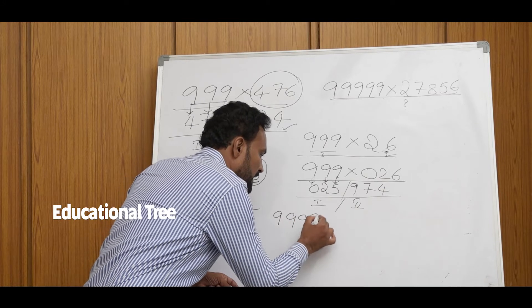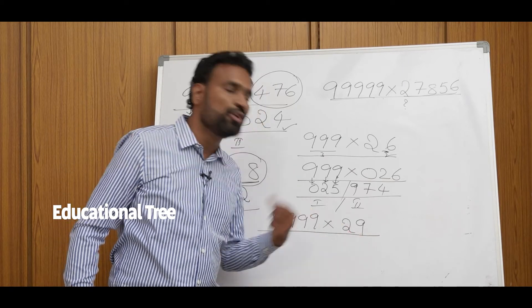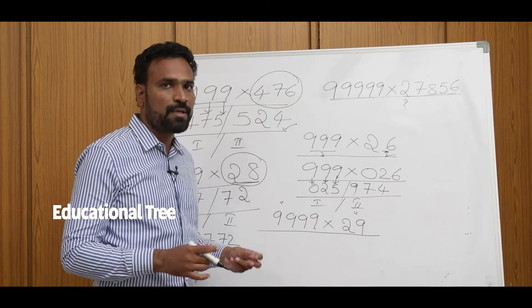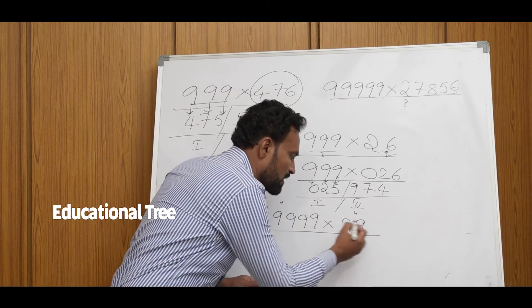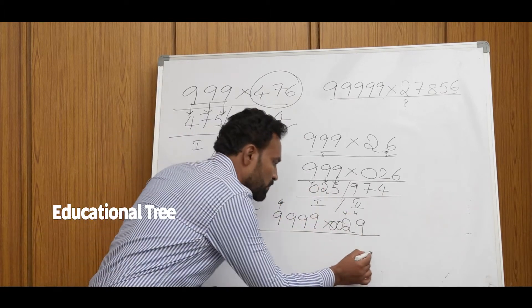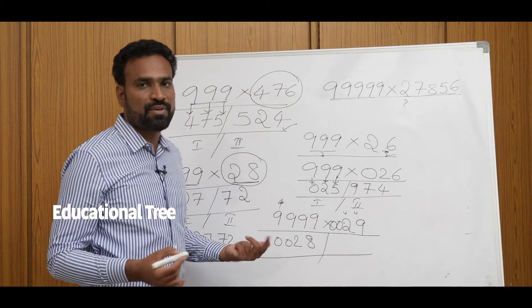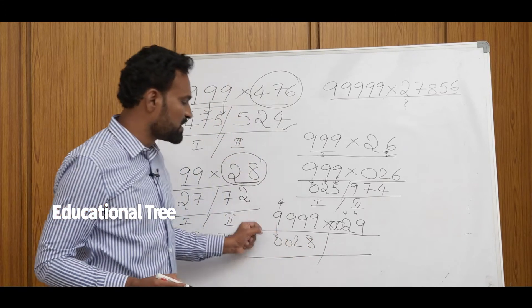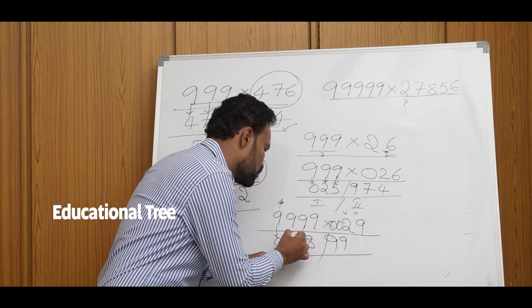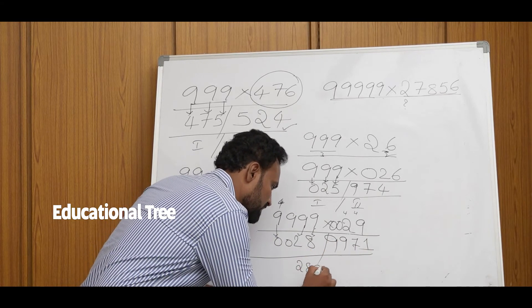Next problem: 9999 into 29. Here we have 4 nines and only two digits. So we write 29 as 0029 to make it a 4-digit number. One less than 0029 is 0028 — that is the first part. For the second part: 9 minus 0 is 9, 9 minus 0 is 9, 9 minus 2 is 7, and 9 minus 8 is 1. So our final answer is 00289971, which is 289971.